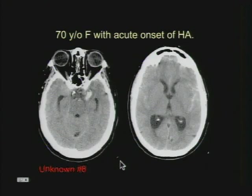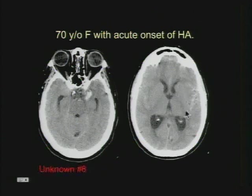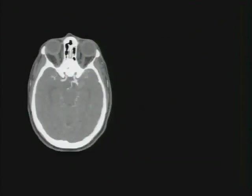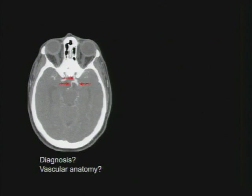The next case is a 70-year-old female with acute onset of headache. On the non-contrast CT, the patient has a small intraparenchymal hematoma in the medial temporal lobe, but also subarachnoid hemorrhage in the left greater than right sylvian fissures, and hydrocephalus. Especially when there's no history of trauma, you're thinking of aneurysm and you want to order a CTA. Here's the CTA — this is a PCOM aneurysm. You can see the supraclinoid internal carotid artery, the posterior communicating artery as a branch of the supraclinoid, and a PCOM aneurysm right at the origin.